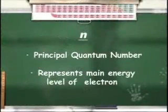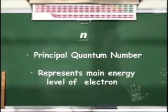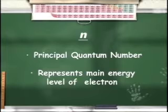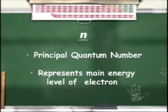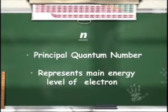Let's begin our discussion of the four quantum numbers by starting with N, the principal quantum number. Energy level is a number, and just as you can't stand between the rungs of a ladder, electrons can't be between energy levels. Electrons must be in one energy level or another. The principal quantum number N represents the energy level in which we find an electron. N's values are whole numbers beginning with one.